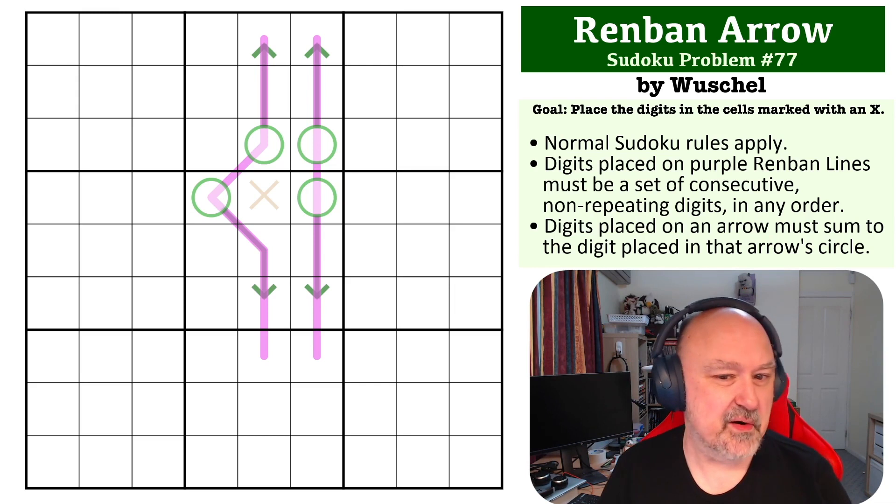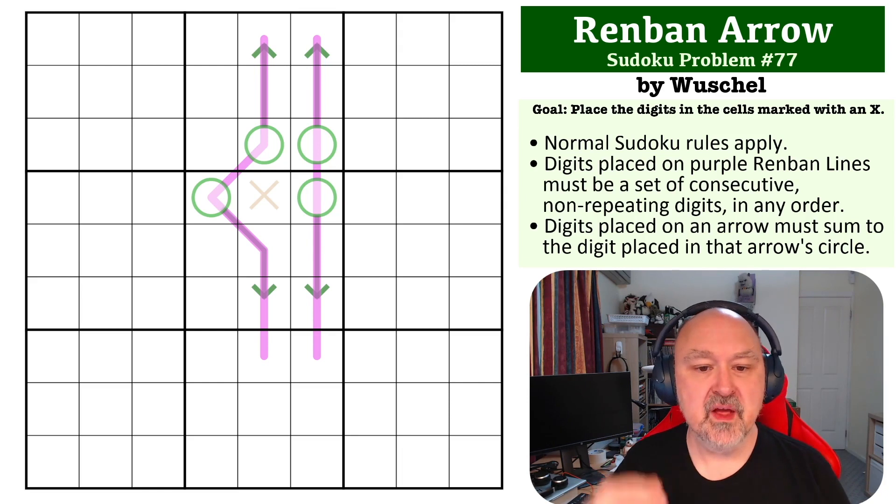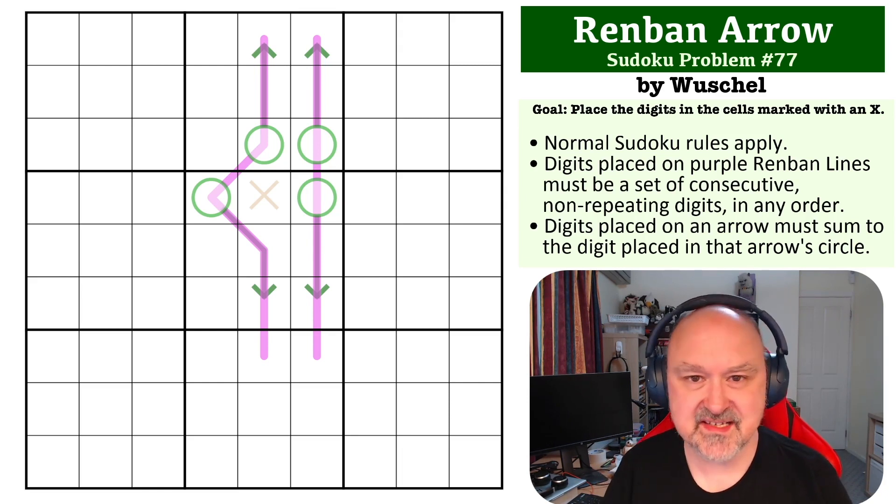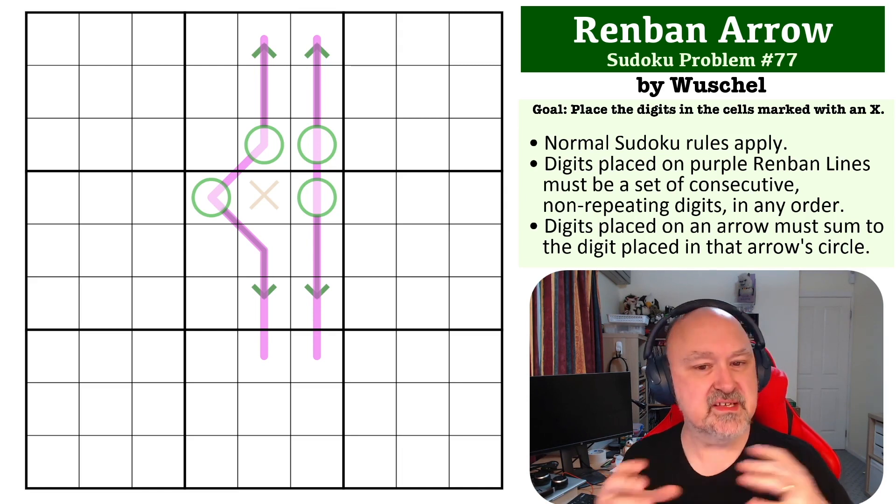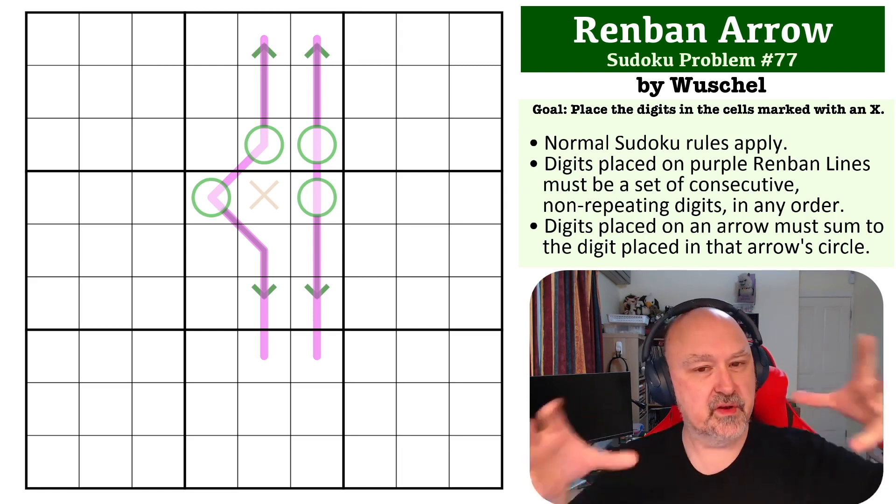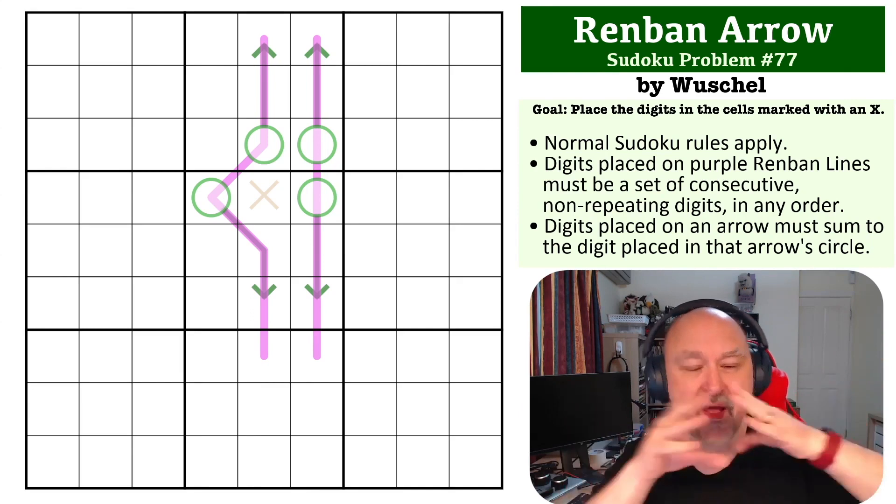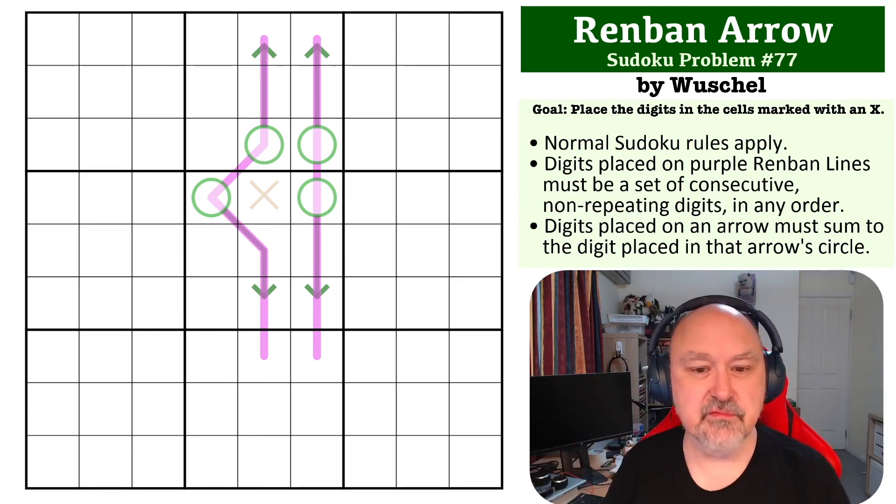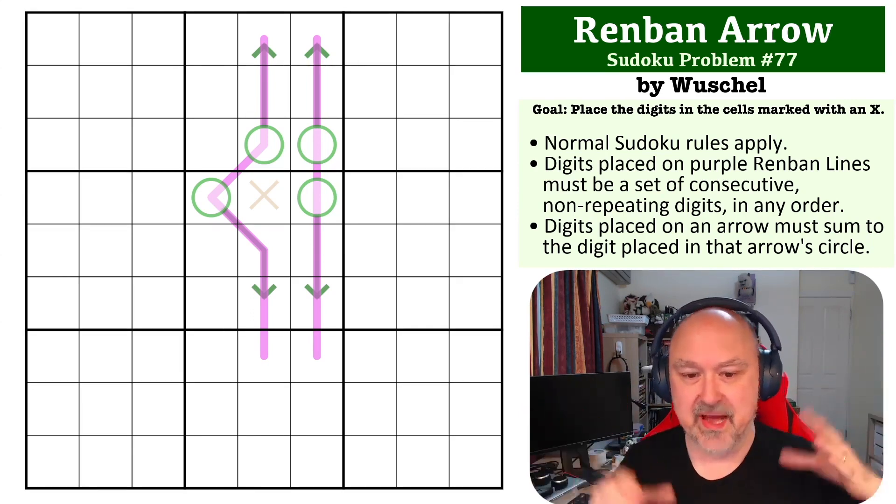The way this one works - and I'm sorry that the arrows and the renbans overlap so it's hard to see, but I think we've made it as visible as possible - is that the renbans must contain a set of consecutive non-repeating digits in any order. What that means is if you were to take the digits that would end up on the line off and sort them, they would be a consecutive run of digits. You cannot have any gaps and you cannot repeat digits.